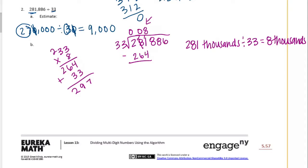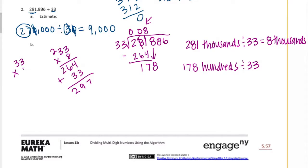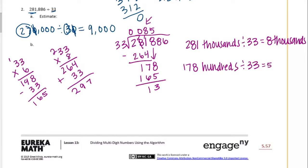We need to borrow. 11 minus 4 is 7, 7 minus 6 is 1. Then bring down the 8. So now we're doing 178 hundreds — because this 8 is in the hundreds place — divided by 33. 33 can probably go in... let's try 6 times. That's too big, so I'm going to subtract 33: that gives 165. So we can go in 5 times, which is equal to 5 hundreds.